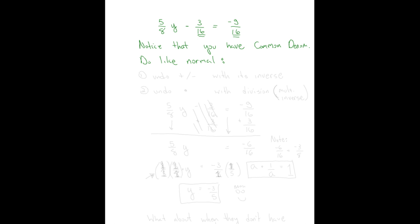By normal, I mean you want to first undo any additions or subtractions with their inverse. Here we have subtract three-sixteenths, so we're going to add three-sixteenths. Then the second thing you want to do is undo any multiplication. Since this is a fraction, we're going to undo it with division — but specifically, we're going to use the multiplicative inverse, which will make life easier and avoid complex fractions.